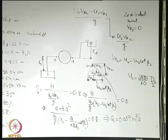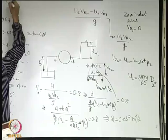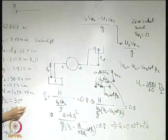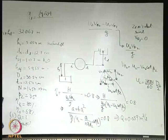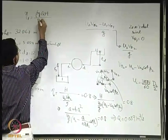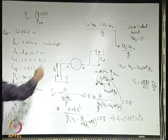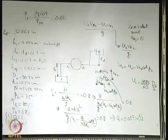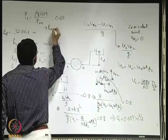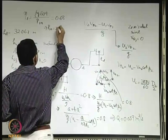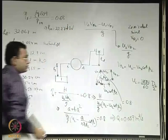For the second part, the power input is related to power output by the overall efficiency. The power output is ρgQH, and the overall efficiency is 68%. Dividing power output by 0.68 gives the power input as 22.27 kilowatt.